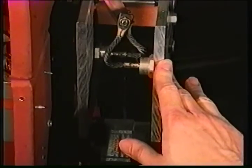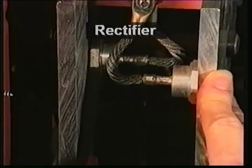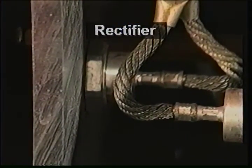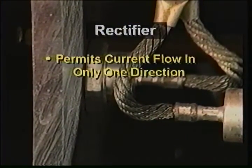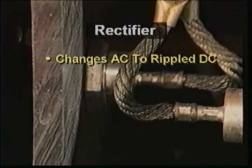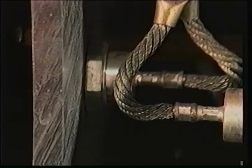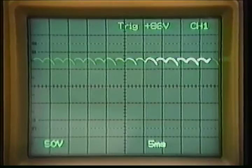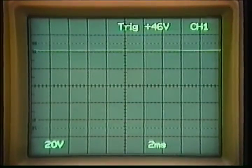The second component is a rectifier. It operates like a one-way valve or gate, permitting current to flow in only one direction. It does not alter the voltage or current, but merely changes the current from AC to a special kind of direct current called rippled DC. Notice how rippled DC differs from smooth DC on the oscilloscope.